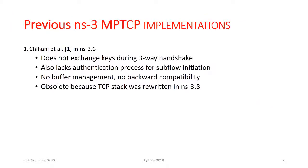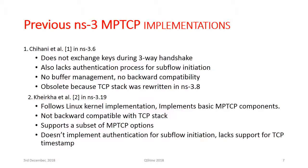There are three previous NS3 MPTCP implementations. The first, by Chihani and others, was in NS3.6. It does not provide exchange of keys during the three-way handshake, has issues related to authentication and buffer management, is not backwardly compatible, and is currently obsolete since the TCP stack was rewritten in NS3.8. Chihani and others also produced an MPTCP implementation in NS3.19, which follows the Linux kernel implementation and implements all basic MPTCP components, but is not backwardly compatible with the TCP stack, supports only a subset of MPTCP options, does not authenticate subflows, and lacks support for TCP timestamps.